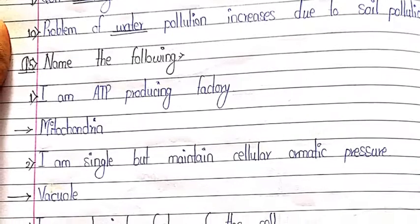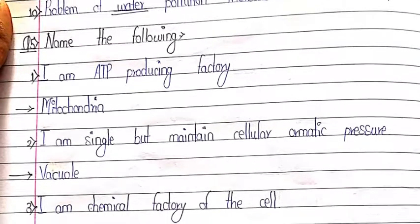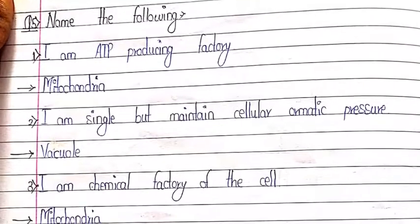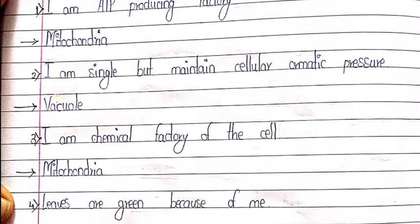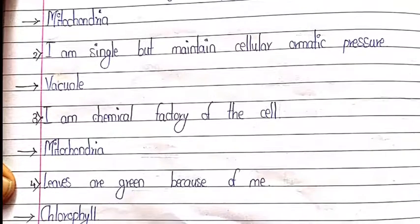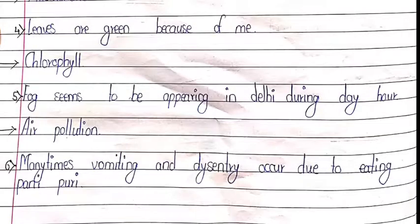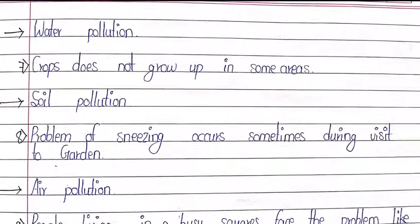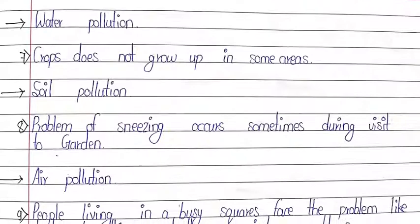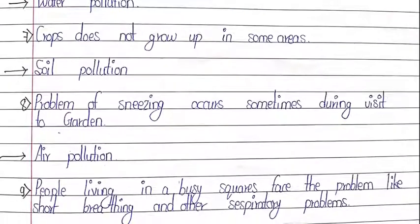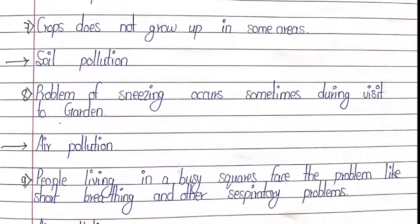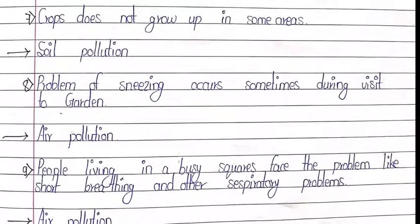Question number 5: Name the following. First: I am an ATP-producing factory — mitochondria. Second: I am single but maintain cellular osmotic pressure — vacuole. Third: I am a chemical factory of the cell — mitochondria. Fourth: leaves are green because of me — chlorophyll. Fifth: fog seems to be appearing in Delhi during daytime — air pollution. Sixth: many times vomiting or dysentery occur due to eating of pani puri — water pollution. Seventh: crop does not grow in some areas — soil pollution. Eighth: problem of sneezing occurs sometimes during a visit to garden — air pollution. Ninth: people living in a busy square face problems like shortness of breath and other respiratory problems — air pollution.